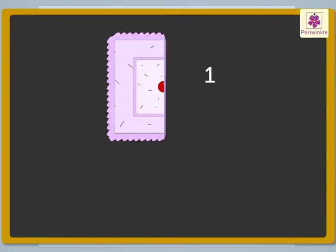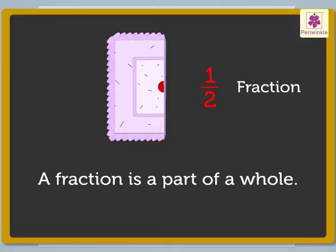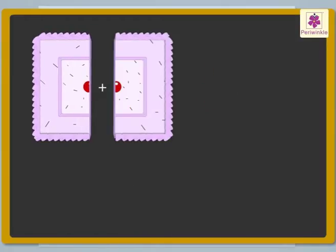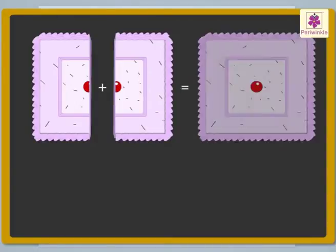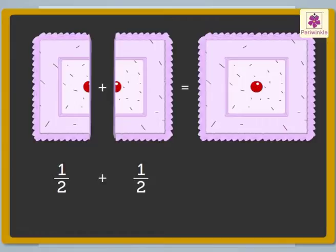1/2 is a fraction. A fraction is a part of a whole. Two halves make a whole. Half plus half is equal to one, that is, one whole object.